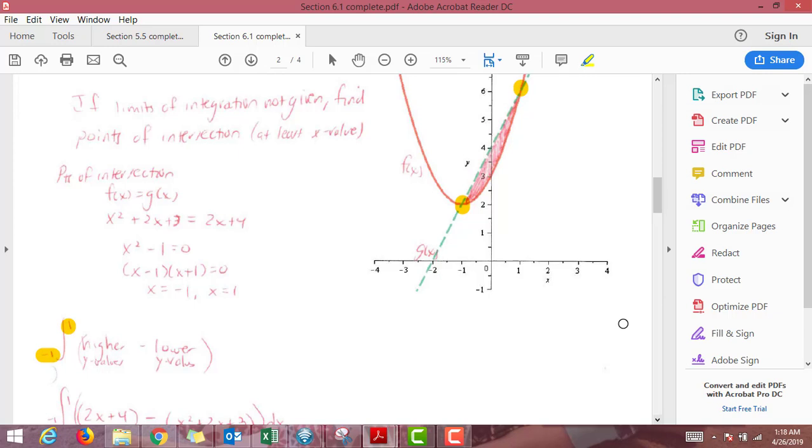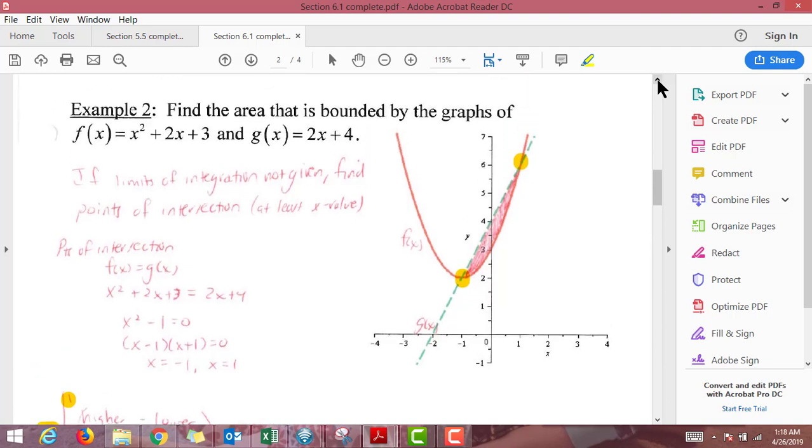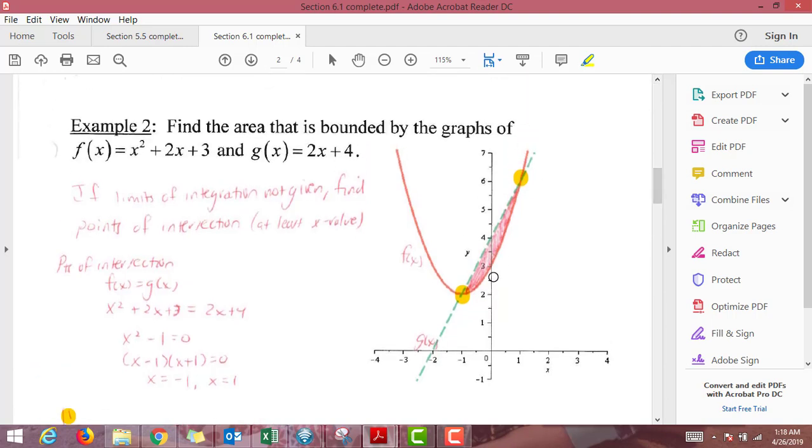And then we're doing higher minus lower. So this is a good example of one where for whatever reason, some of my students have a hard time knowing which order to subtract here. So I could use a test value. We're going from negative 1 to 1. So 0 is an x value that's in between that interval.